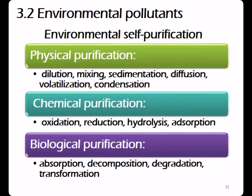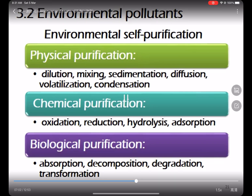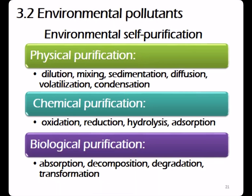There are three kinds of environmental self-purification. The first is physical purification, which includes dilution, mixing, sedimentation, diffusion, mineralization, and condensation. The second is chemical purification, which changes chemical properties through oxidation, reduction, hydrolysis, and absorption. The third is biological purification, which includes absorption, decomposition, degradation, and transformation.